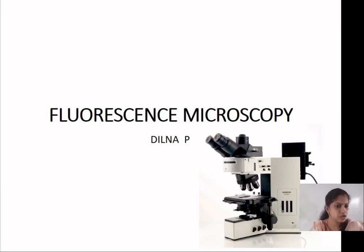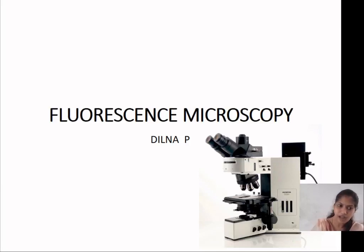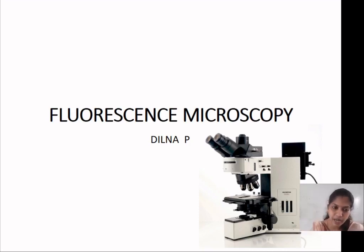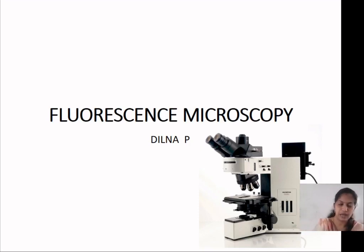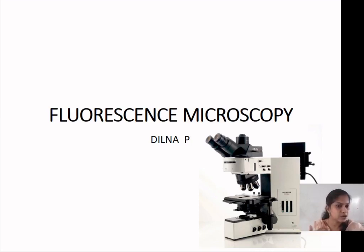Hello everyone. The next microscope is the fluorescence microscope. Let's look at light microscope and dark field. Light and dark field — the main difference is the condenser and the field. Light means the field is bright, and dark field means the field is dark. Fluorescence is the main difference from the dark field microscope.